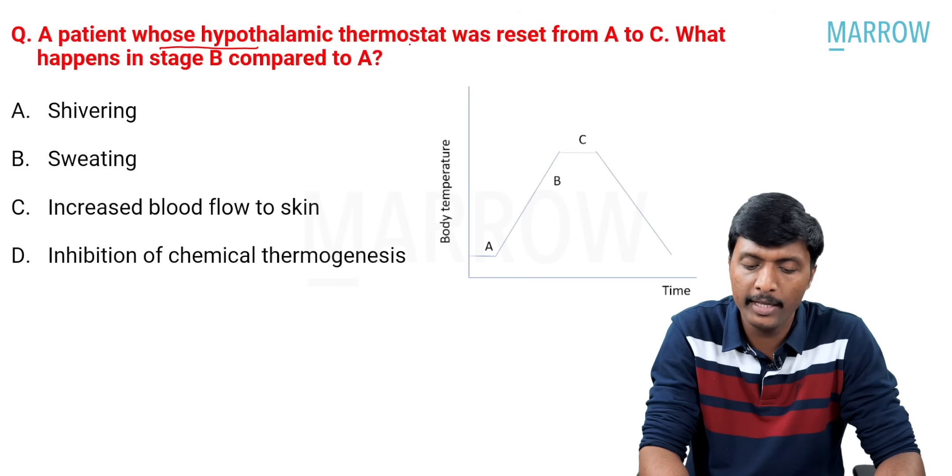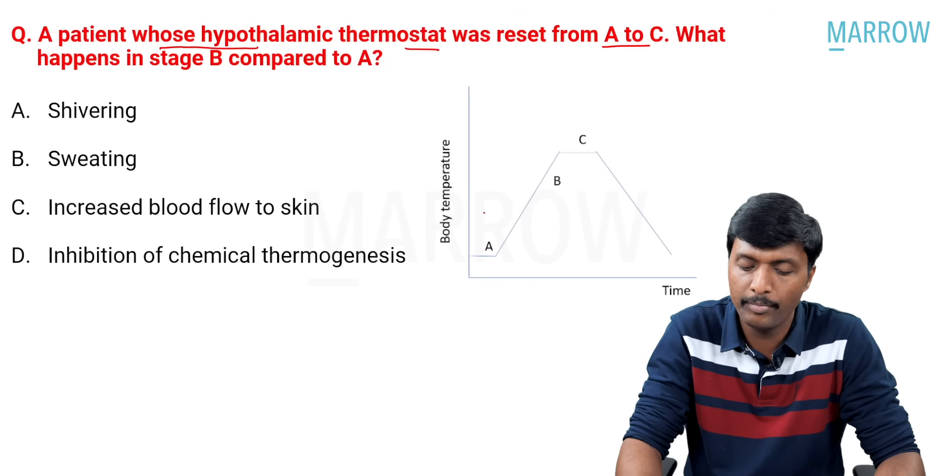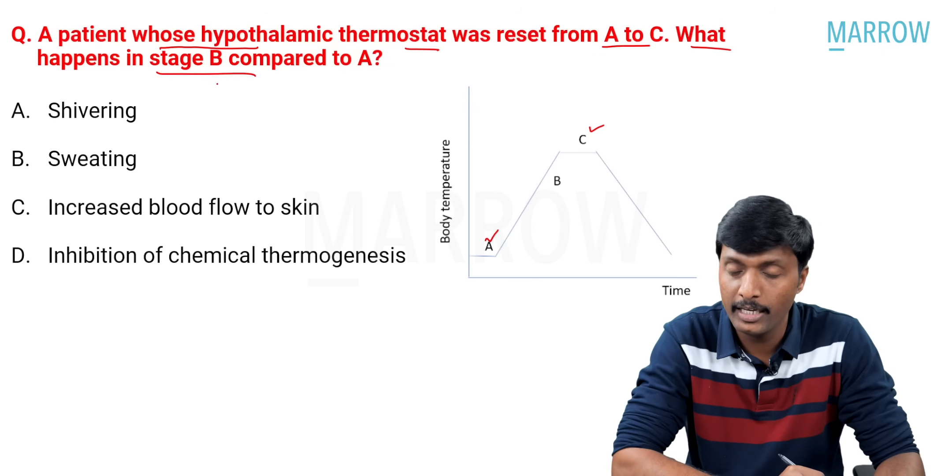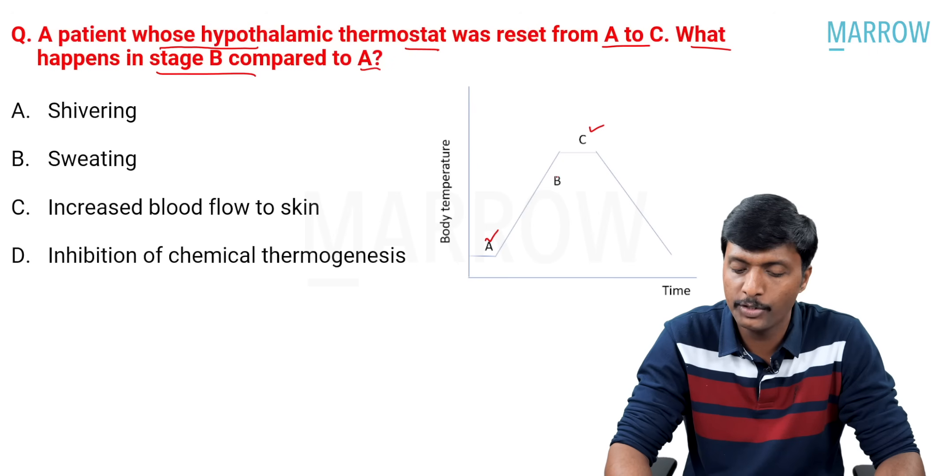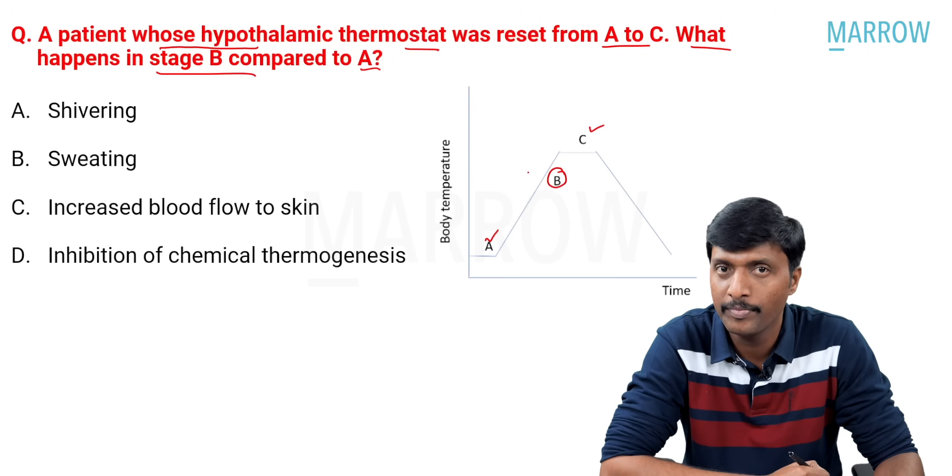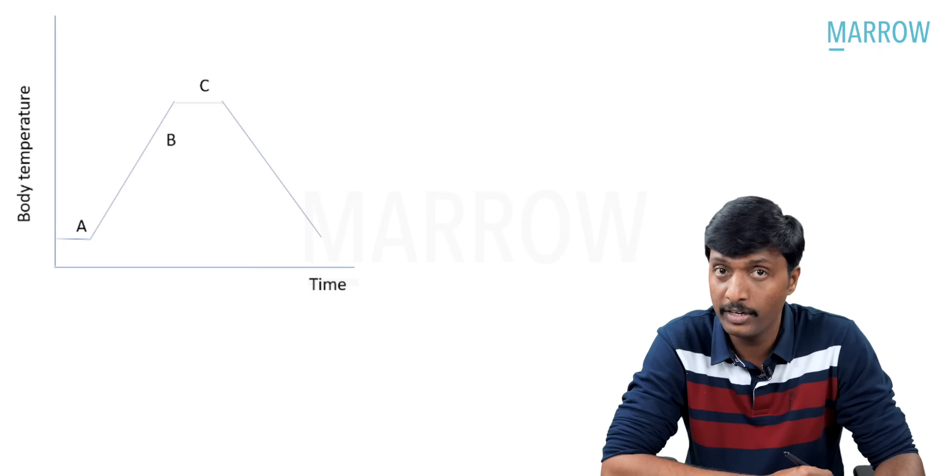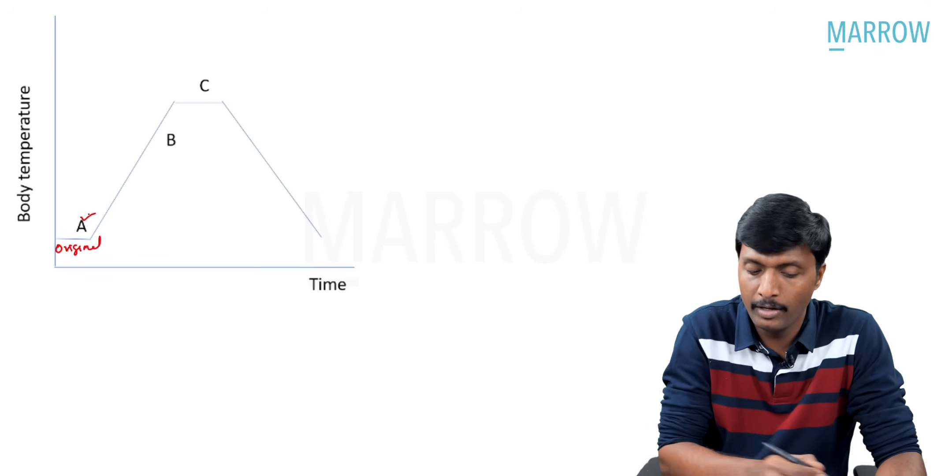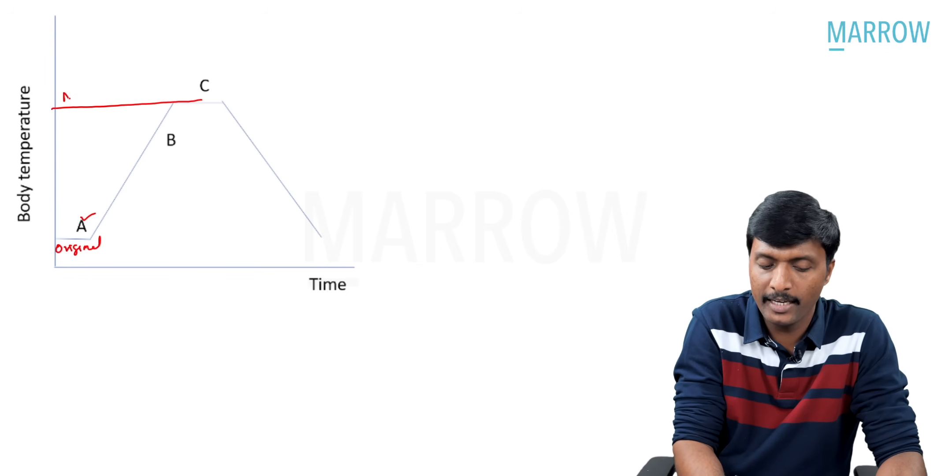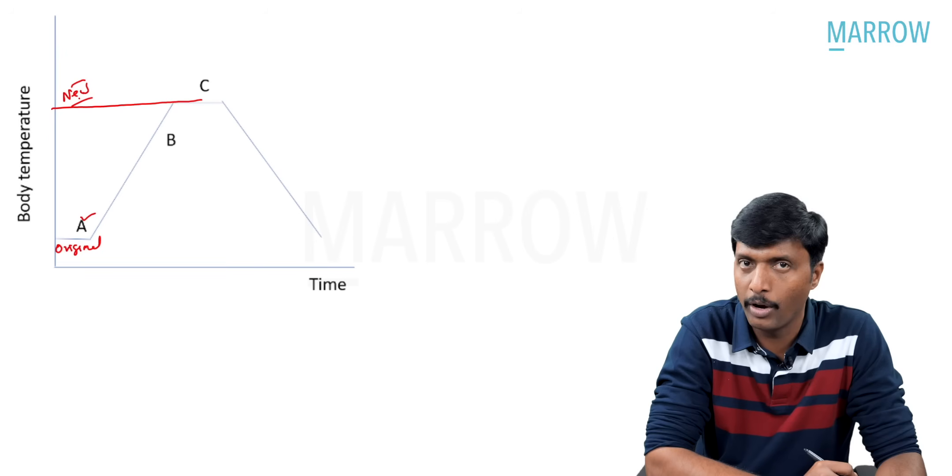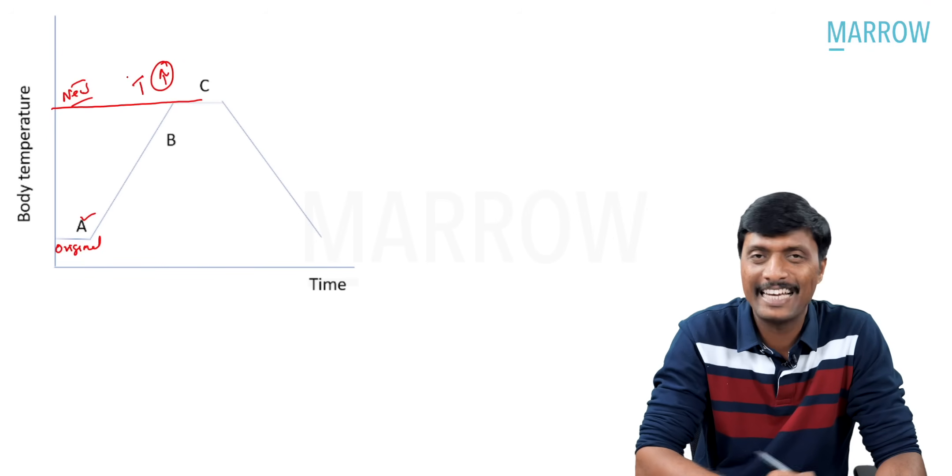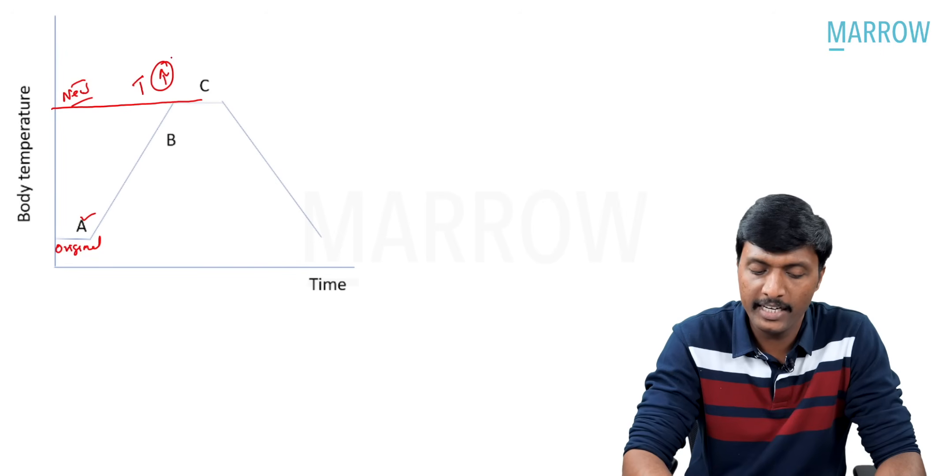A patient whose hypothalamic thermostat was reset from A to C. What will happen in stage B compared to A? What is going to happen here in stage B? A very important concept guys, look very carefully. This is original, A. Now it is moved to C, the new set point. That means temperature is increasing. The set point is increasing.